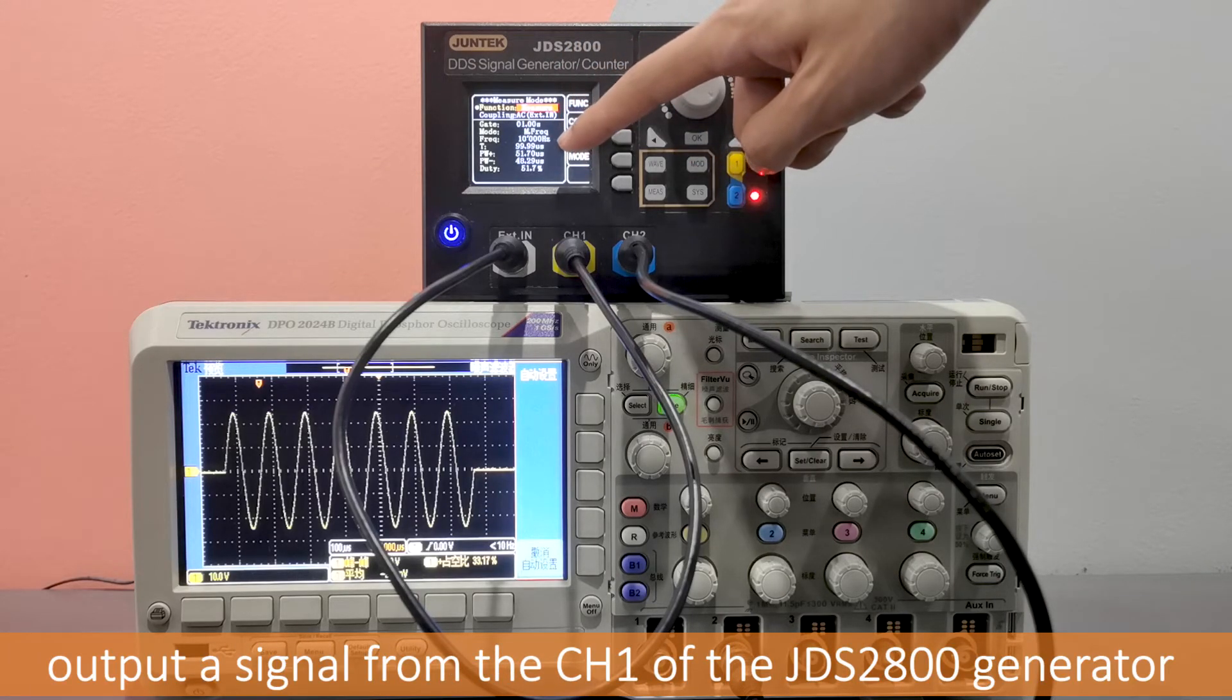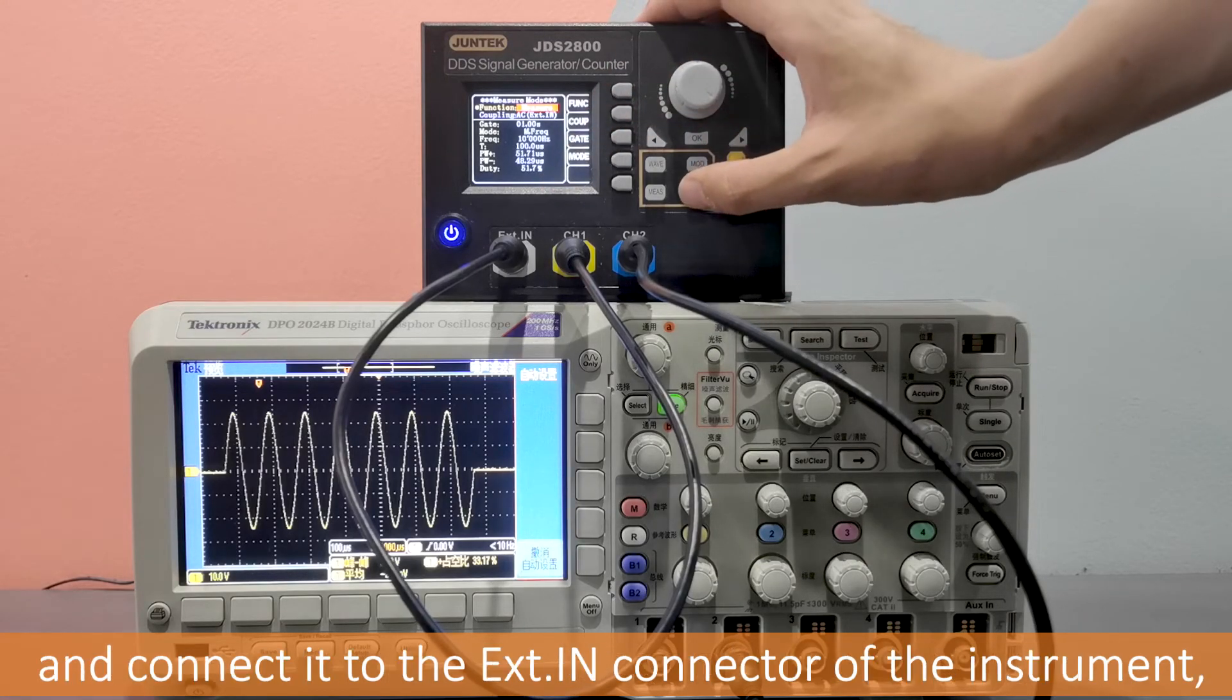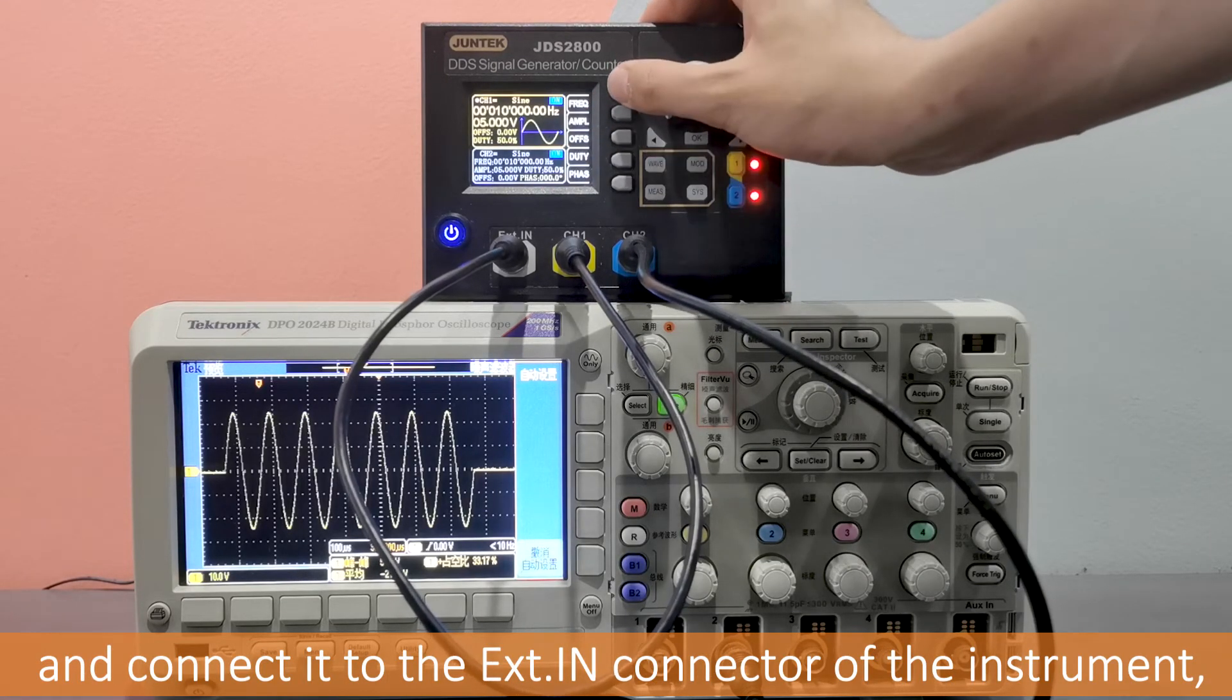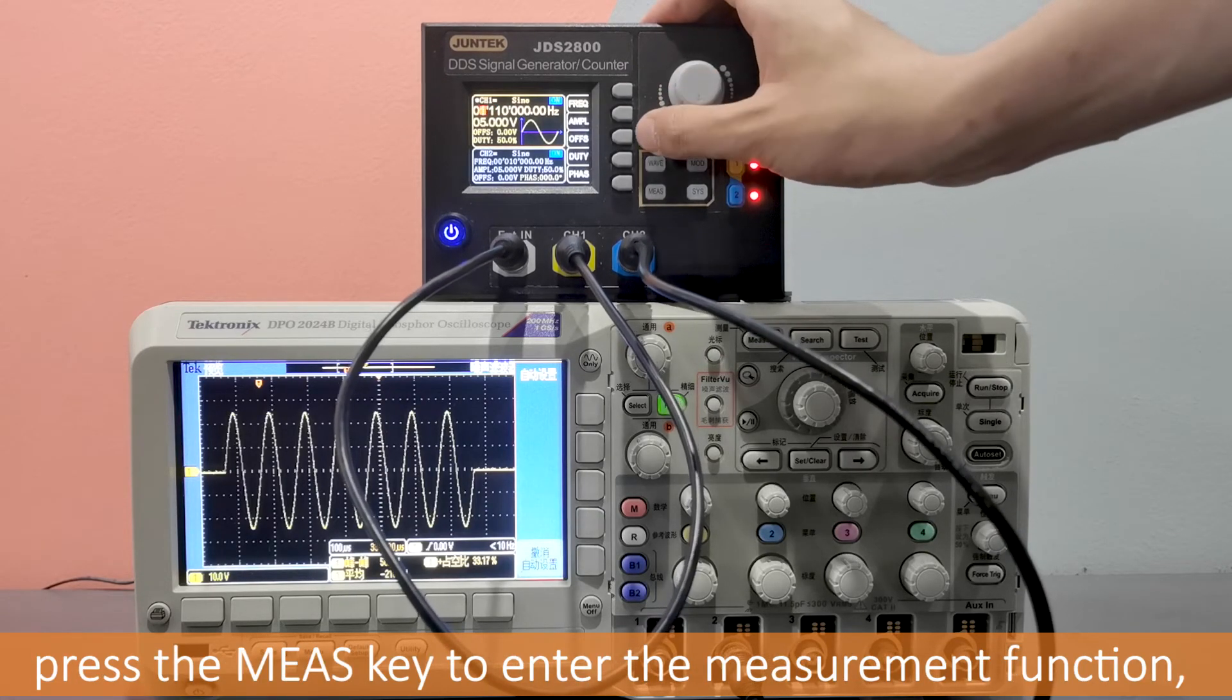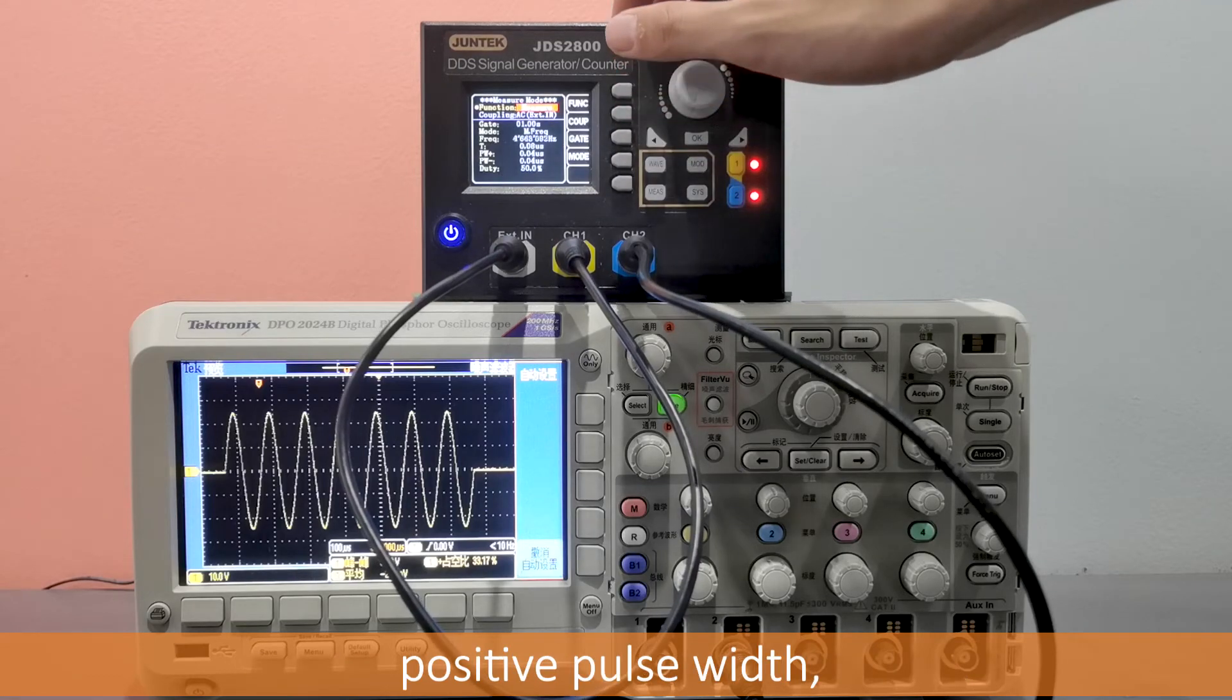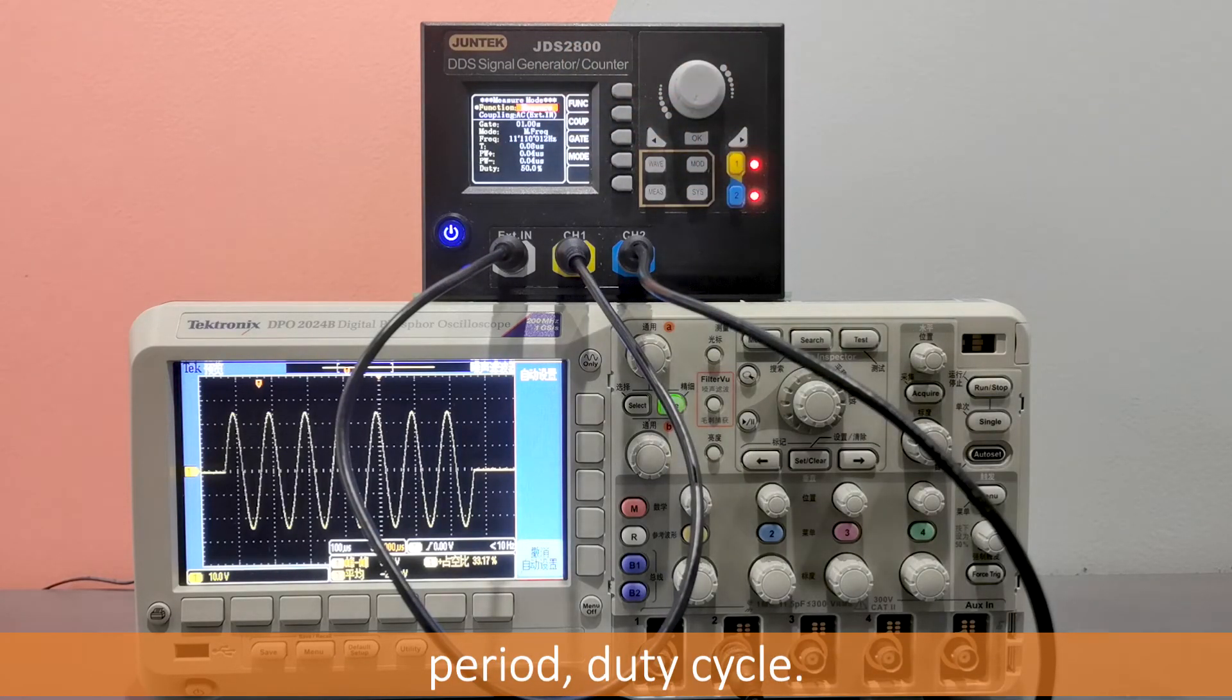Measurement function. Output a signal from the CH1 of the JDS2800 generator and connect it to the EXT.IN connector of the instrument. Press the MES key to enter the measurement function. You can see the measured frequency, positive pulse width, negative pulse width, period, duty cycle.